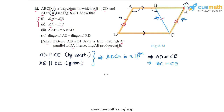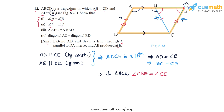This further means that in triangle BCE, because BC and CE are equal, the angles opposite these sides must also be equal. The angle opposite BC is angle BEC, and the angle opposite CE is angle CBE. So in triangle BCE, angle CBE is equal to angle CEB. Let's assume both these angles have a measure of x degrees.